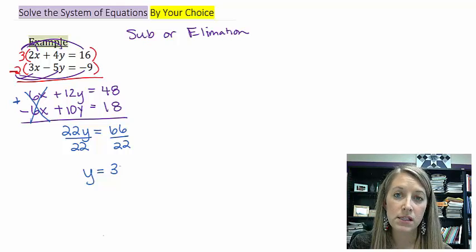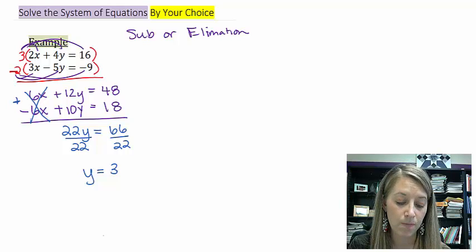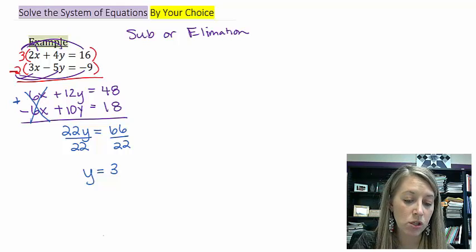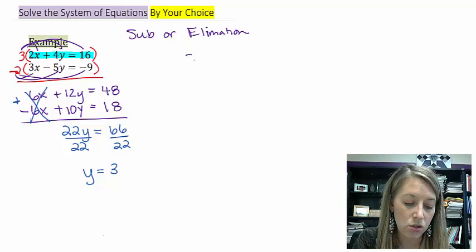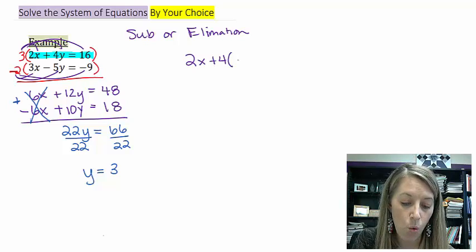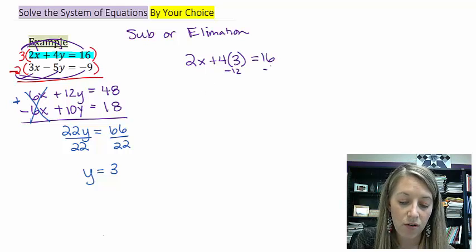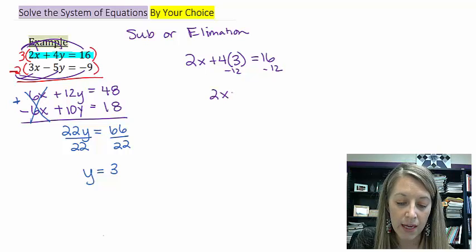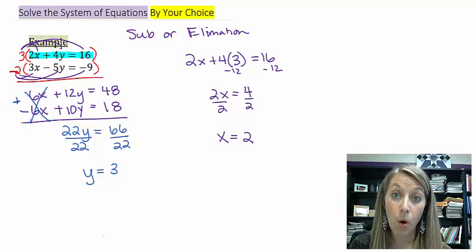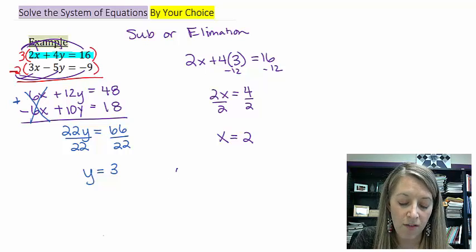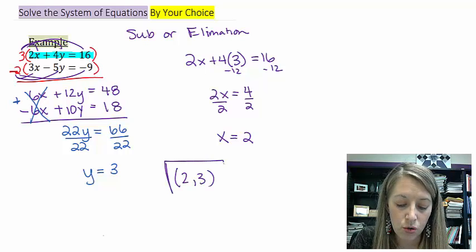Okay. I need to take this and I need to back substitute it into one of the equations to figure out what my X variable is. It doesn't matter which equation to use, so I'm just going to pick the first one. So when I put Y in here, 2 times X plus 4 times my Y, which is now 3, equals 16. Subtract 12 from both sides gives me 2X is equal to 4. Divide by 2. And I get that my X variable is 2. So my point of intersection or my final answer ordered pair is (2, 3).